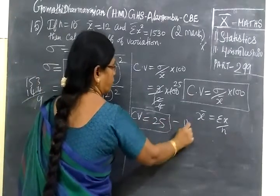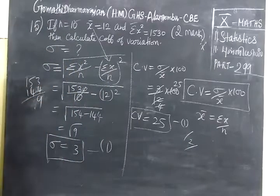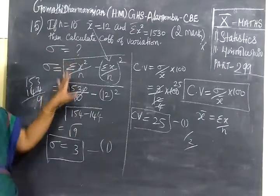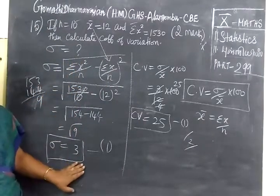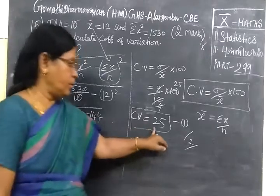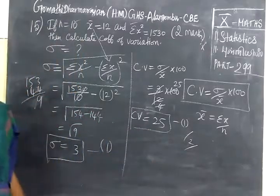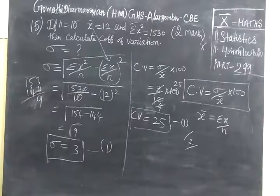So CV equal to 25. So for this 1 mark, totally is 2 mark. So in the value completed, there will be 1 mark. Then for CV as a 2 mark, another 1 mark. So 2 mark total. Thank you.